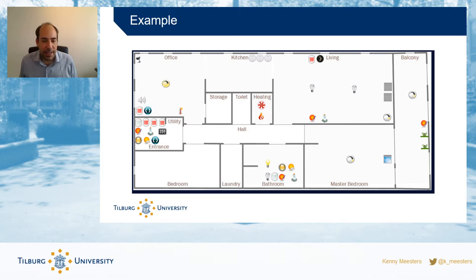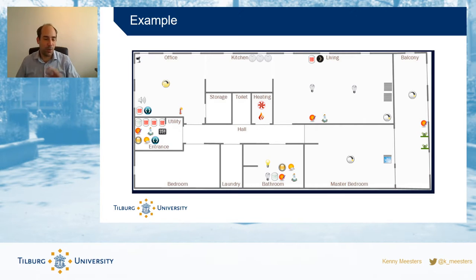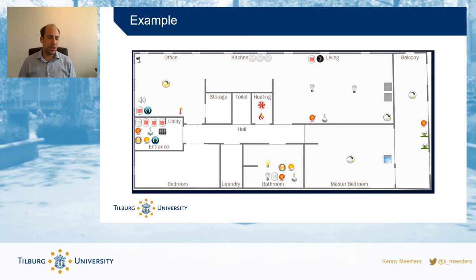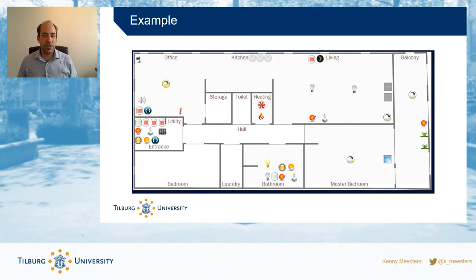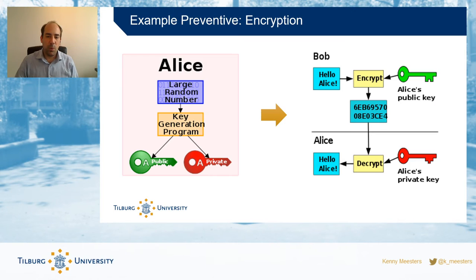Let's look at these controls — preventive, detective, and corrective — using my home layout. I've installed several smart home devices including lights, curtains, vacuum, and heating control, all connected to a home system. That creates an interesting target for people with bad intentions, because you could manipulate the lights, see if I'm home, manipulate the heating, and so on. To prevent people from accessing my home, I could use controls with passwords and logins. One way we do that is with encryption.